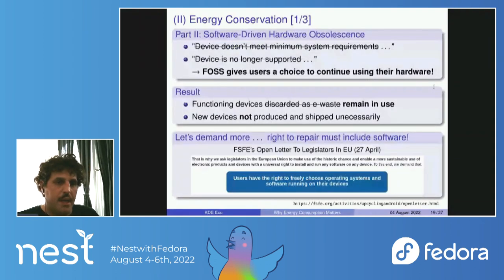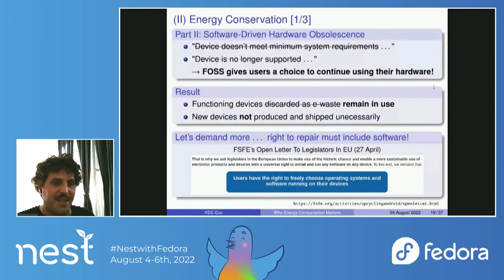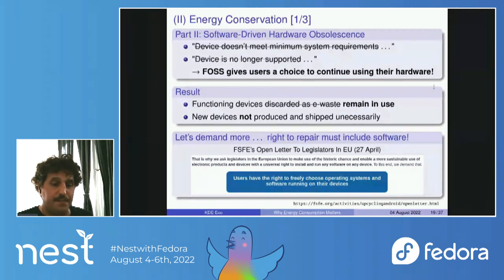FOSS gives users a real choice to continue using their software and supports older hardware. I've introduced GNU Linux to family and friends because they wanted up-to-date operating systems but could no longer use their previous software. Functioning devices remain in use and new devices are not produced unnecessarily — a huge impact on energy consumption. Thinking back to the iPhone, over 80% of its footprint is production, transportation, and end-of-life. We can demand more: the right to repair must include software.